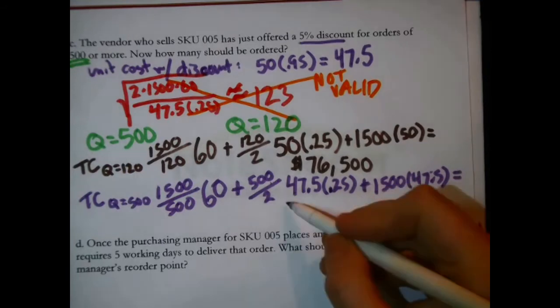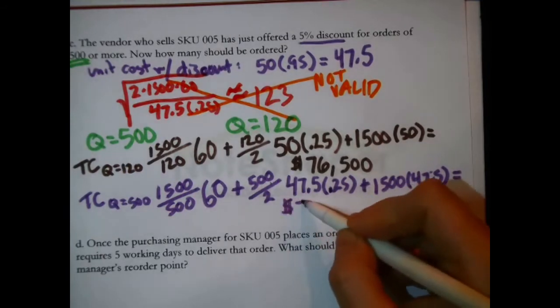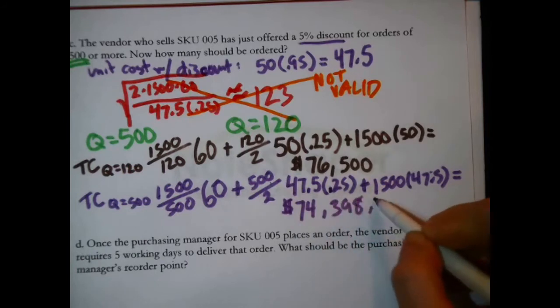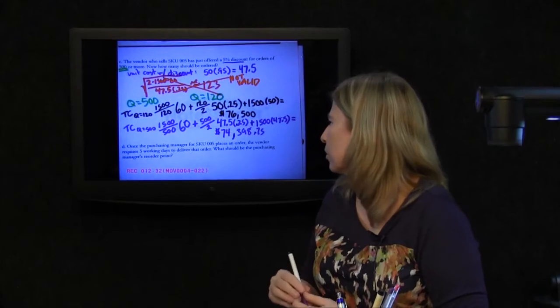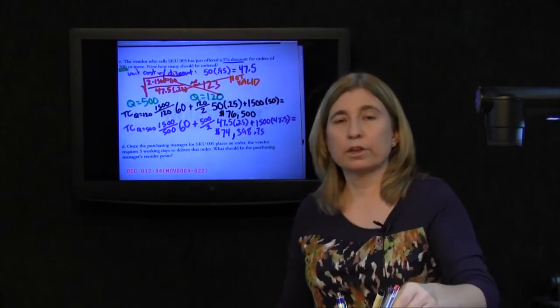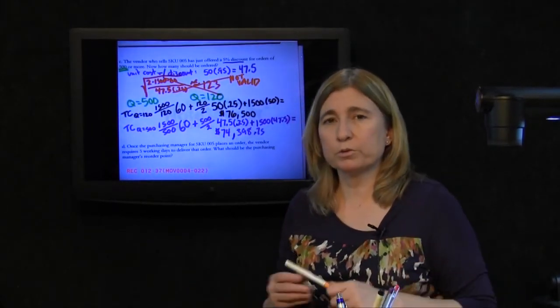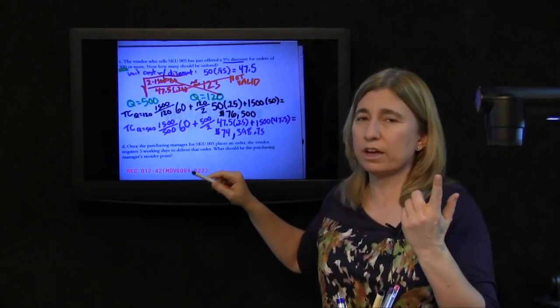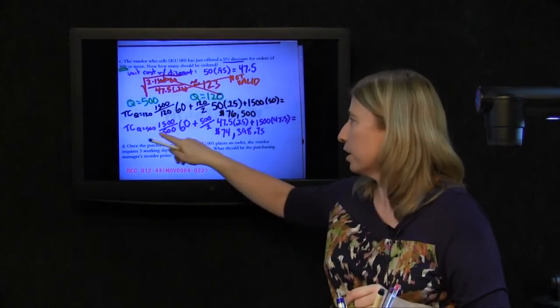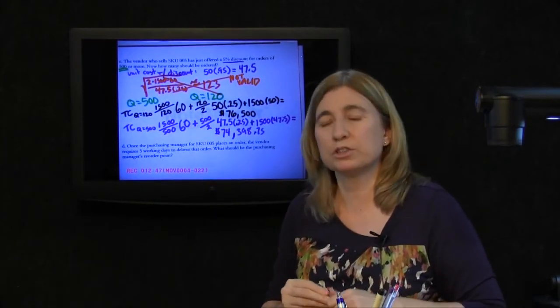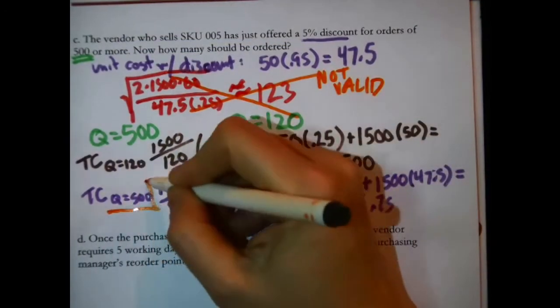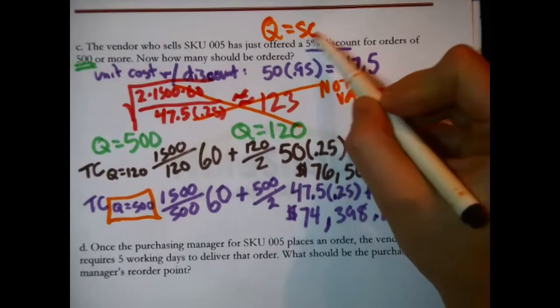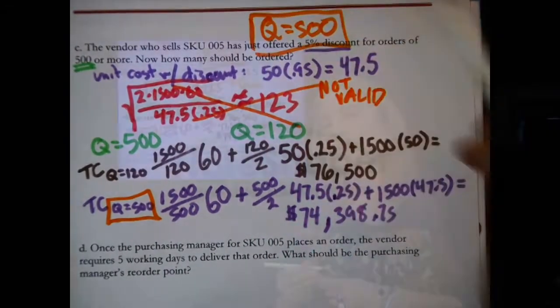Well, it's still a lot of money. $74,398.75. So, alright. Now I see the answer. We're looking for which one has the lower cost. I do see, it's not substantial, but it's savings. I do see some savings with ordering right at the price break. That's why we had to check it. That's the answer.